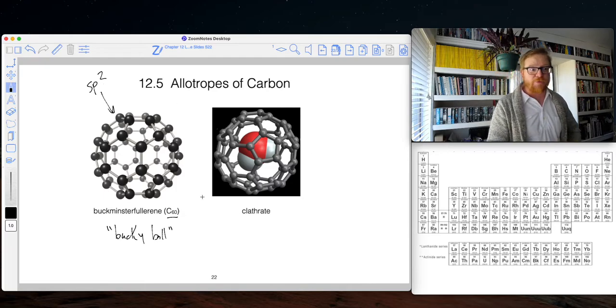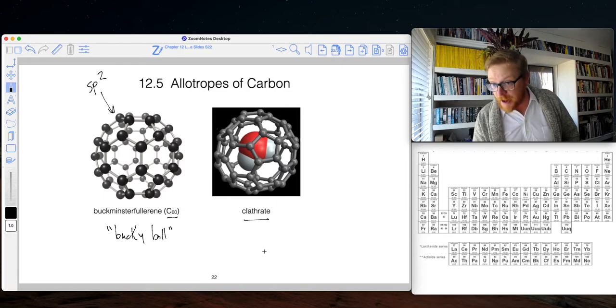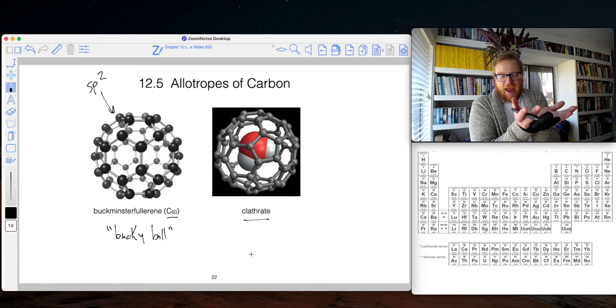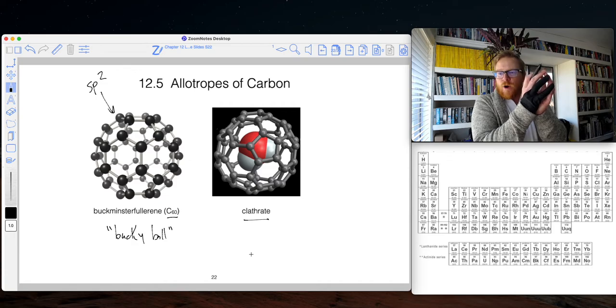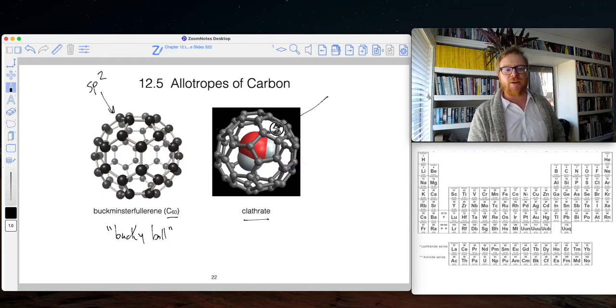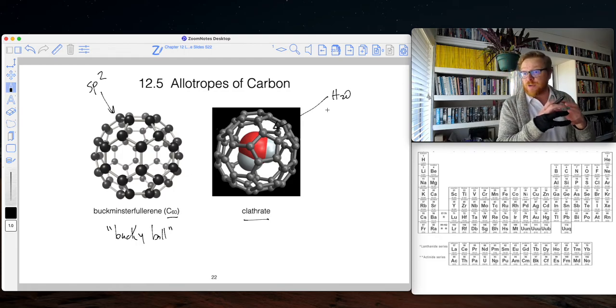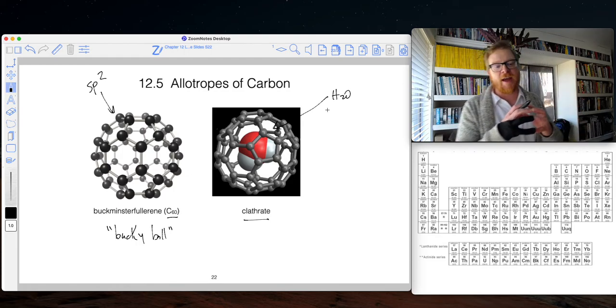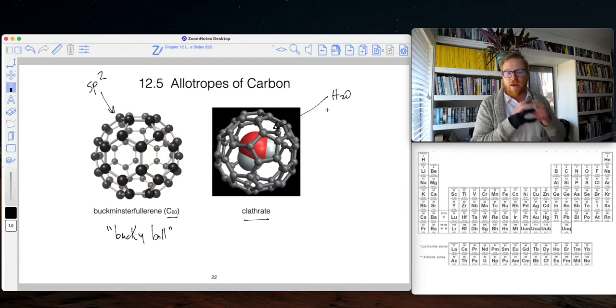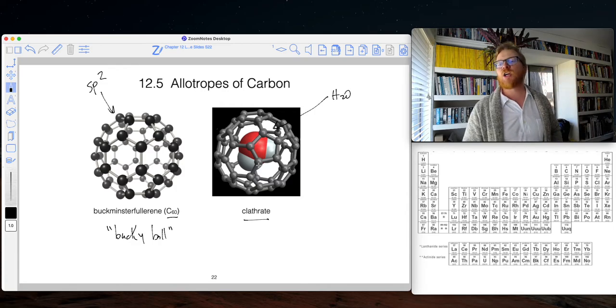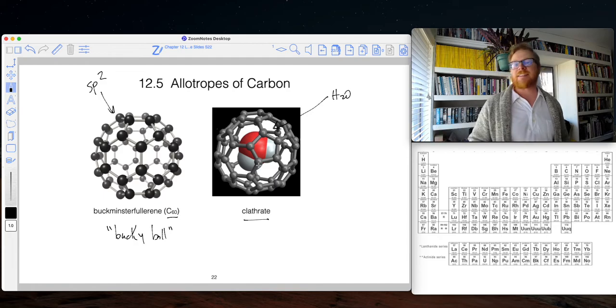So some very smart folks have figured out how to use this as a clathrate. And what a clathrate means is you're able to do some chemical reactions and get this single flat sheet of graphene to form a ball around a molecule of interest. So pictured here is an H2O molecule trapped in a graphene clathrate, or really I should say a buckyball clathrate. And what that means now, this water molecule is trapped forever. It's not going anywhere.